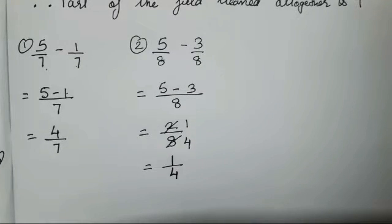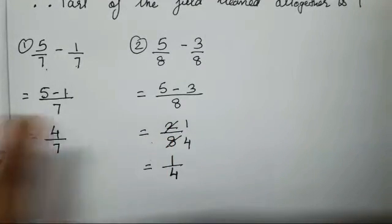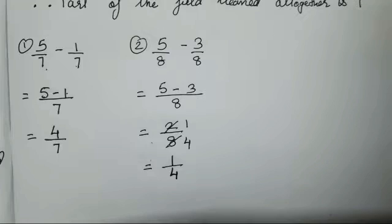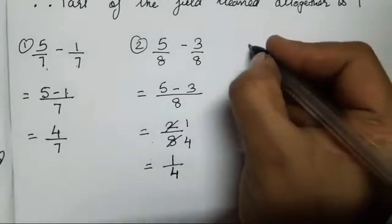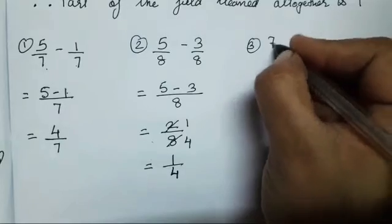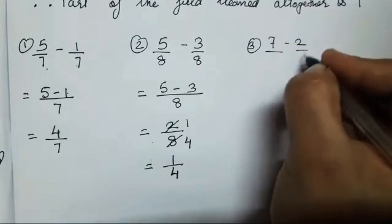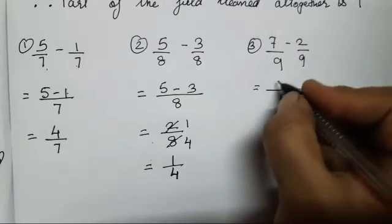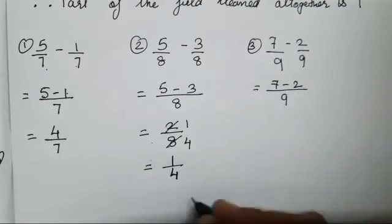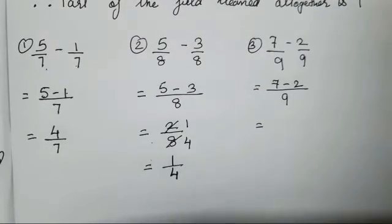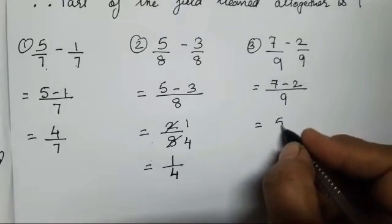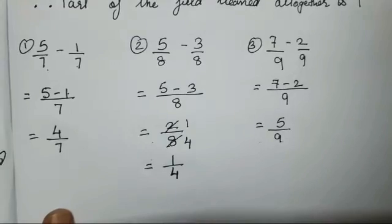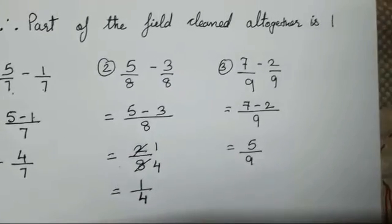You all have to watch whether both the numerator and denominator are being divided in the same table. The third sum is 7 upon 9 minus 2 upon 9. Let's write 9 together. 7 minus 2 is 5 upon 9. It cannot be divided, so we have to keep it as it is.